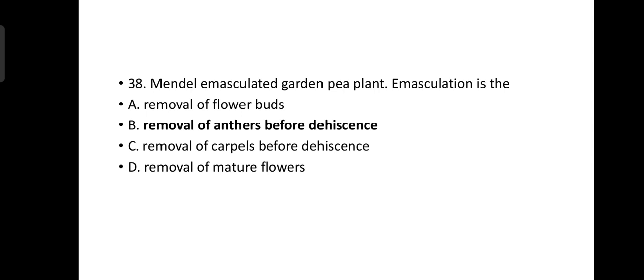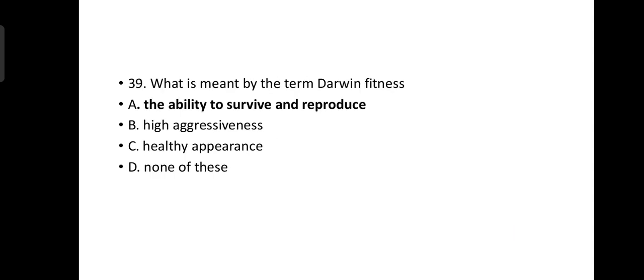Mendel emasculated garden pea flowers. What is the meaning of emasculation? The meaning of emasculation is removal of anthers before dehiscence. What is meant by the term Darwin fitness? The ability to survive and reproduce.